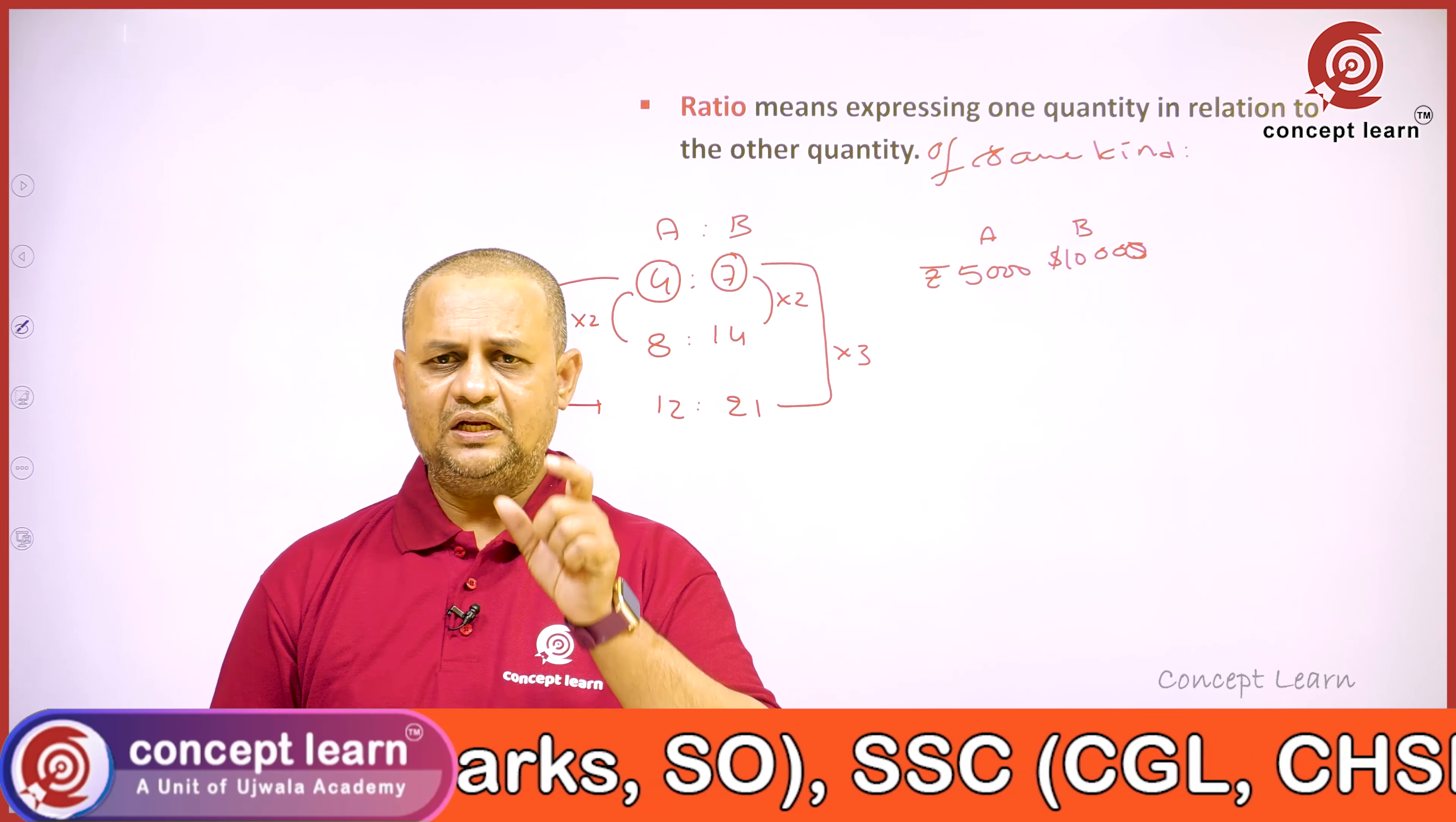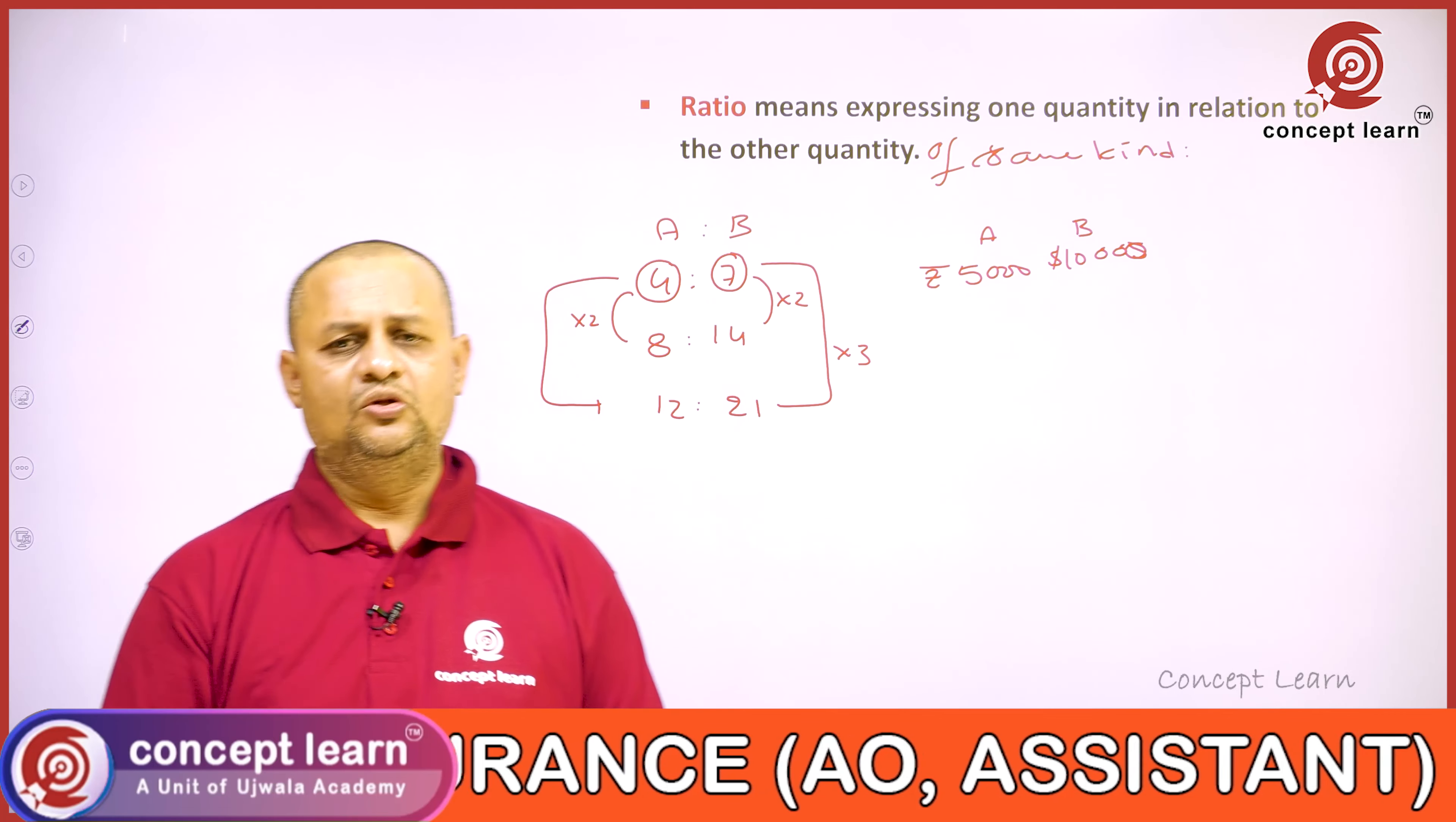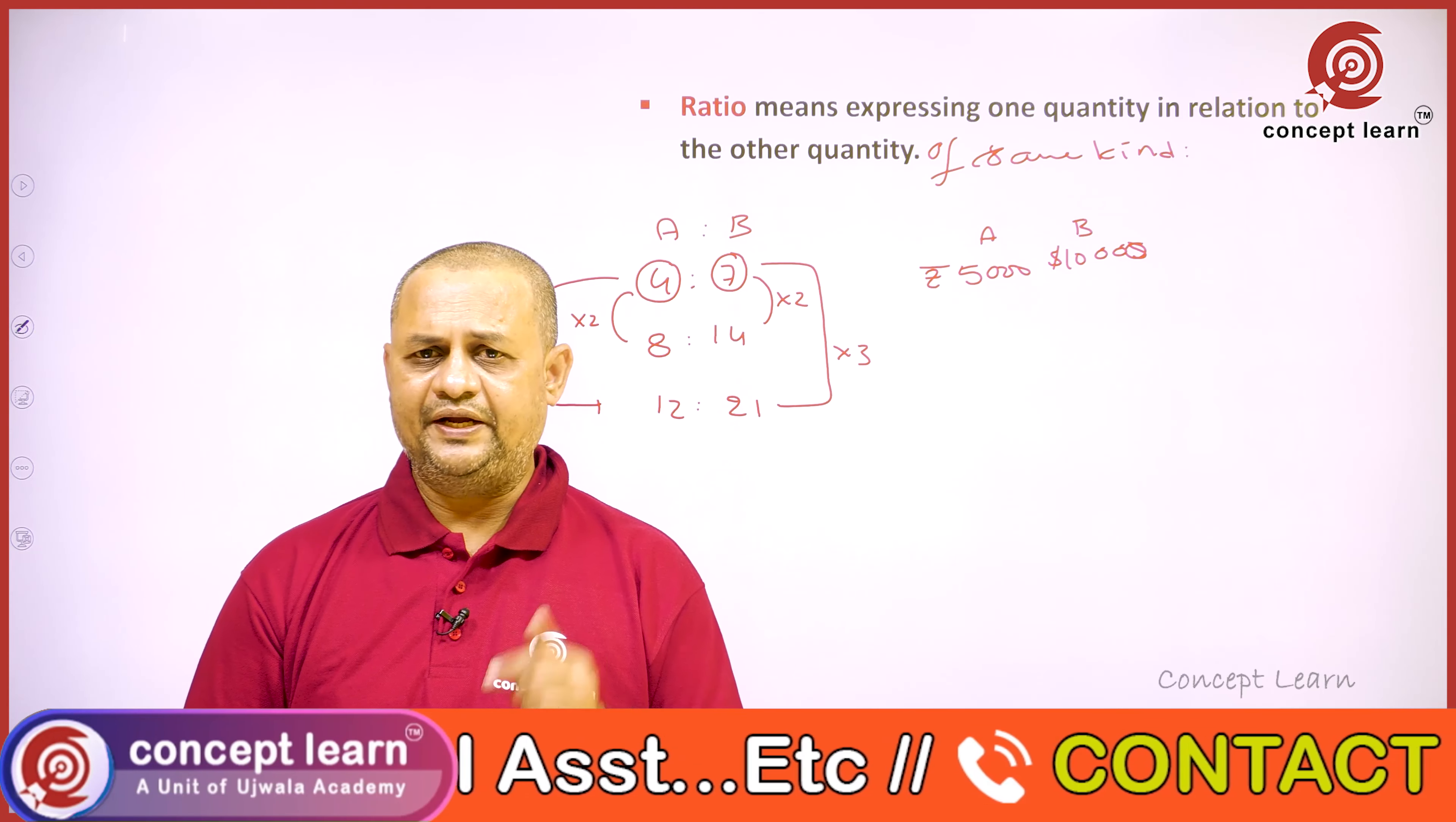So, if these salaries are either both in rupees or both in dollars—of the same kind—then we can define a ratio. The ratio is expressing one quantity in relation to the other quantity of the same kind.